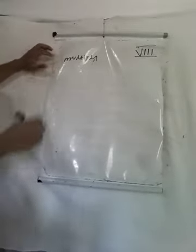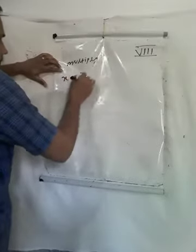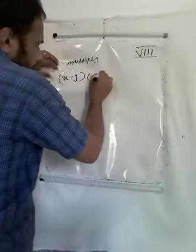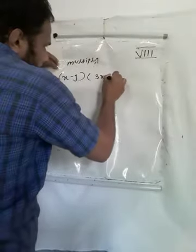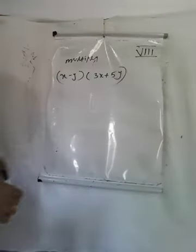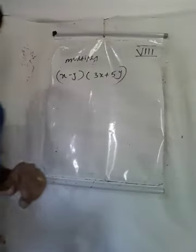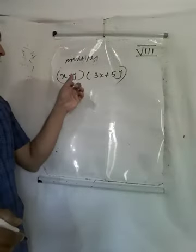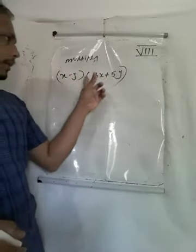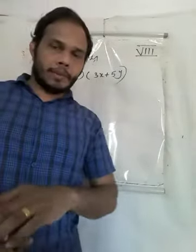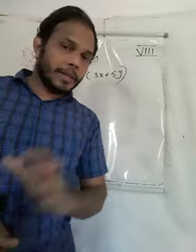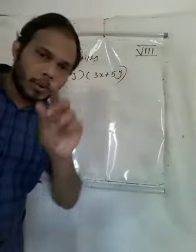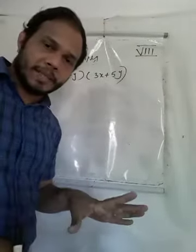Now we can discuss another problem with the same concept: (x minus y) into (3x plus 5y). Here we use the same method — x minus y into bracket 3x plus 5y — and we multiply each term with every term.